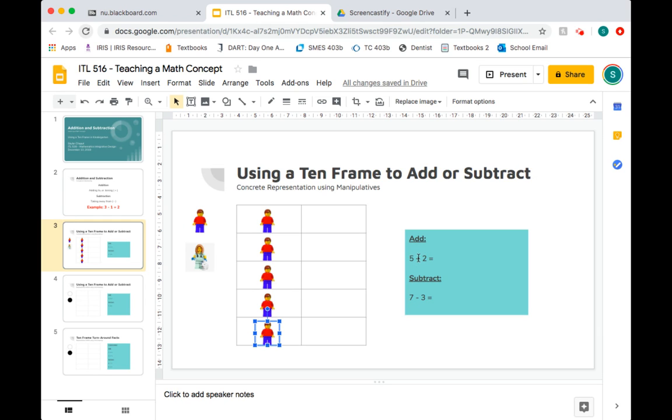So here we have five Lego Larrys representing this five. Now we want to add two more Legos. In this case, it'll be Lego Lauren. We'll put her over here, one and two. So now we have represented on the 10 frame our first problem: five Larrys added to two Laurens.